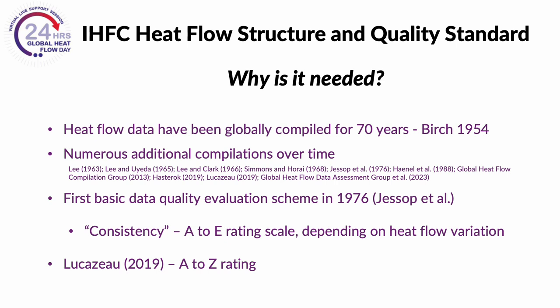Class A is defined as very good, with a variation of less than 10%, while Class B is good with a variation of less than 20%, and Class C is average with a variation of less than 30%. Class D indicates that the data should not be used in heat flow maps, as the variation is greater than 30%, and Class Z indicates that the variation has not been specified.